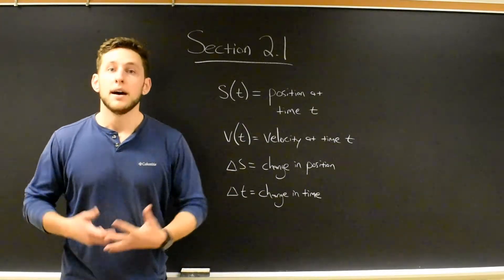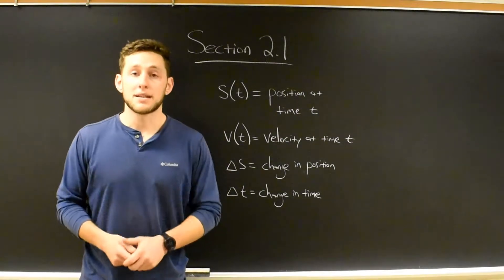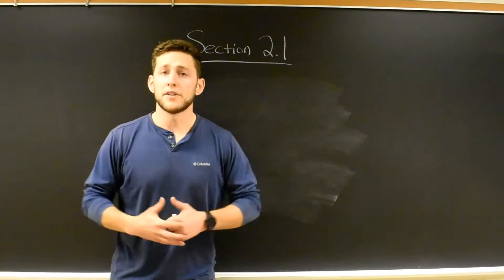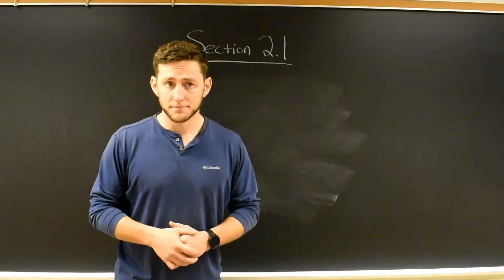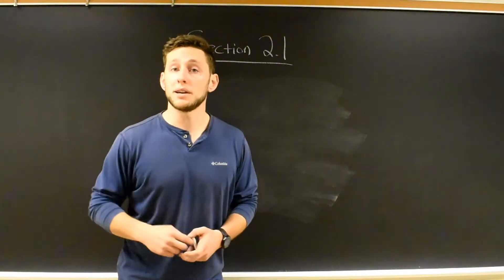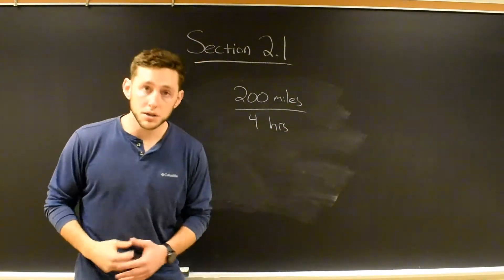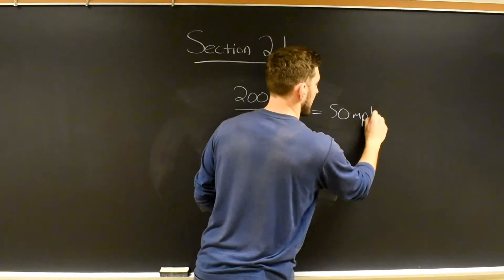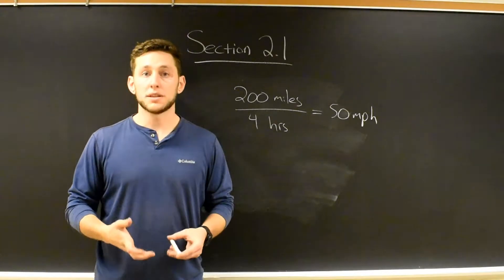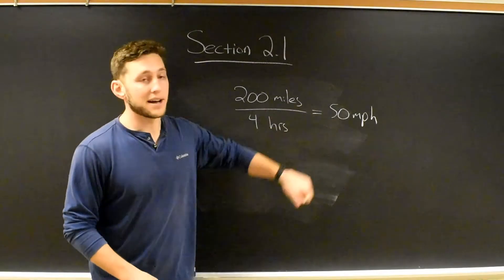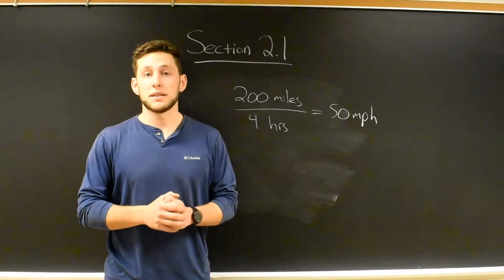We're going to have this notion: delta s and delta t. Anytime you see the letter delta or the triangle, think 'change in.' So delta s stands for change in position, whereas delta t stands for change in time. If I tell you that you ran 200 miles in four hours — you could have been running some of it, walking some of it — however, if you covered 200 miles over four hours, I could tell you that you were going 50 miles per hour on average. That gets us to the notion of average velocity. It doesn't mean you were going 50 miles per hour the whole time.